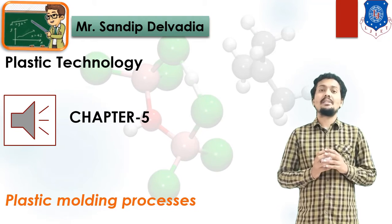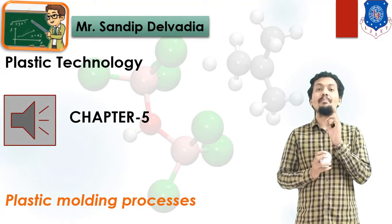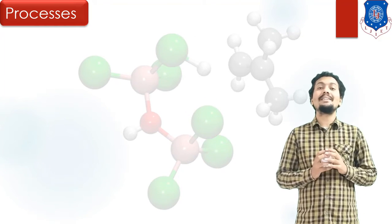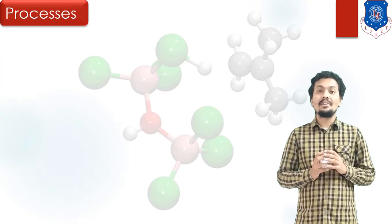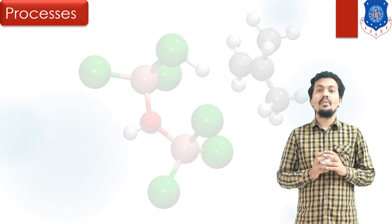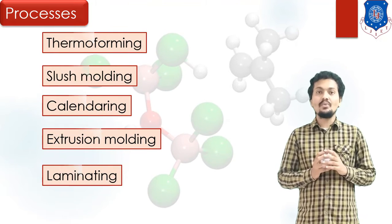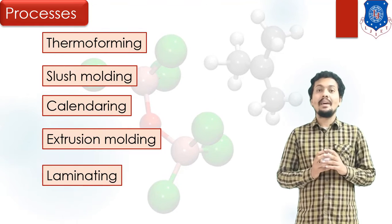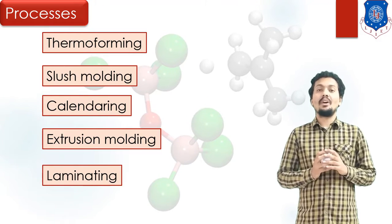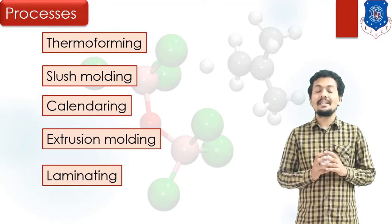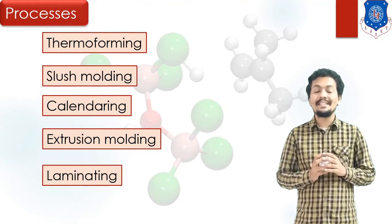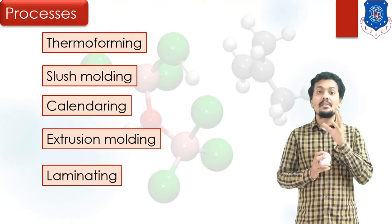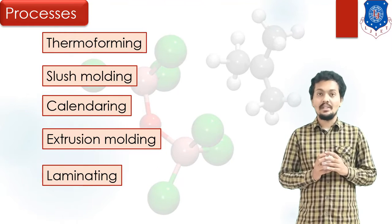In Plastic Moulding Processes, our purpose is to reshape our plastic — also known as Liquid Plastic or Molten Plastic. Here I have mentioned various processes of Plastic Moulding: Thermoforming, Sloss Casting, Sloss Moulding, Calendering, Extrusion Moulding, and Laminating.